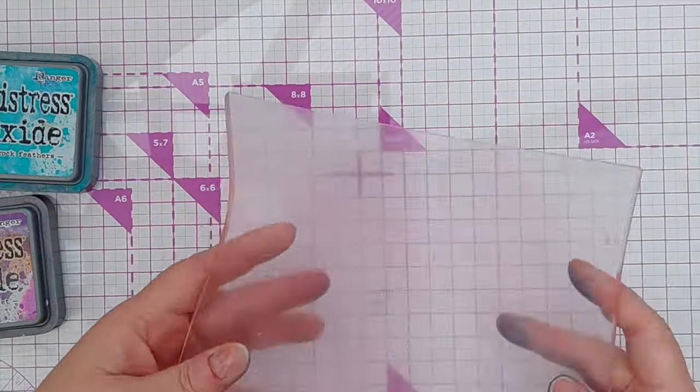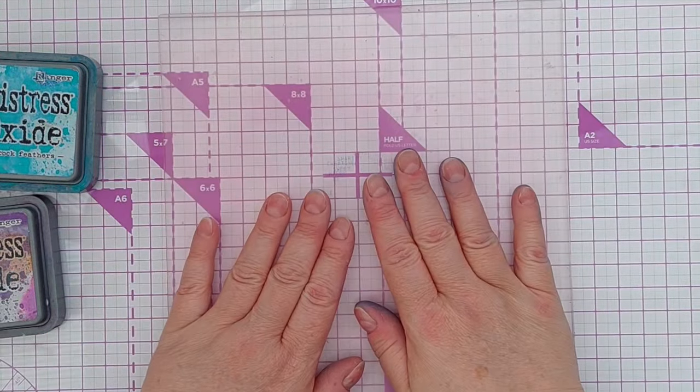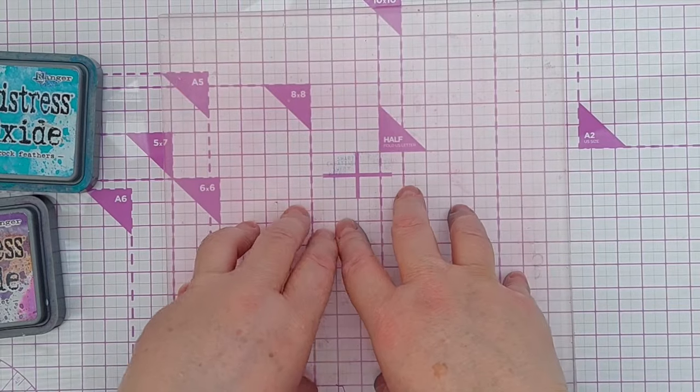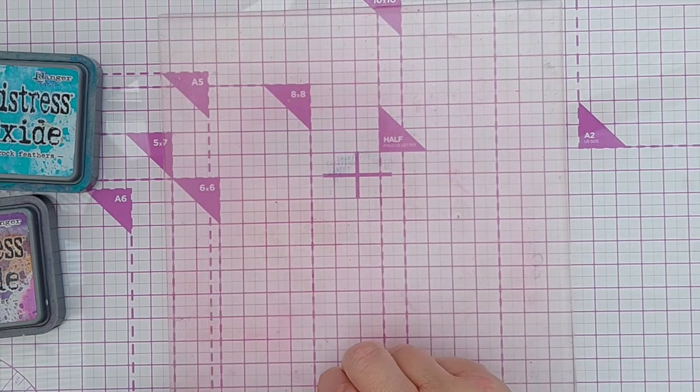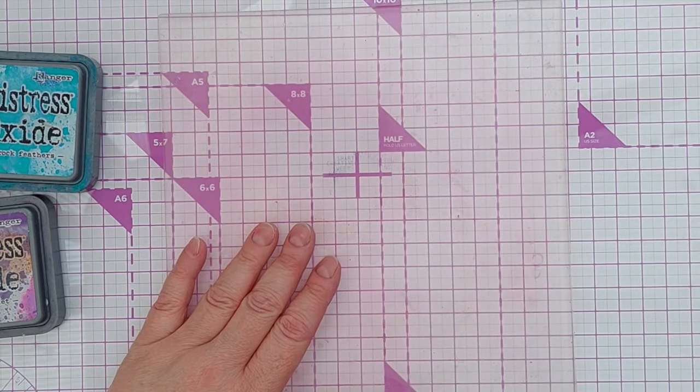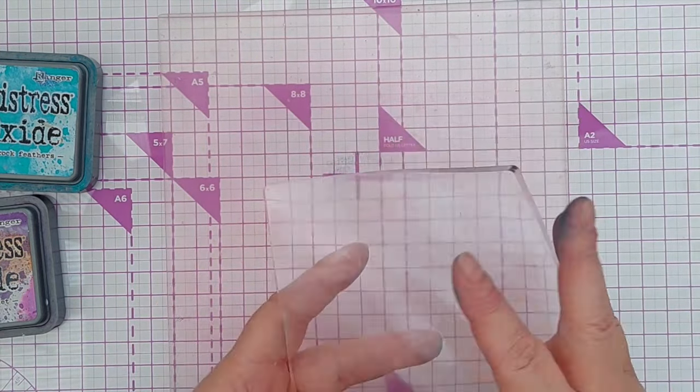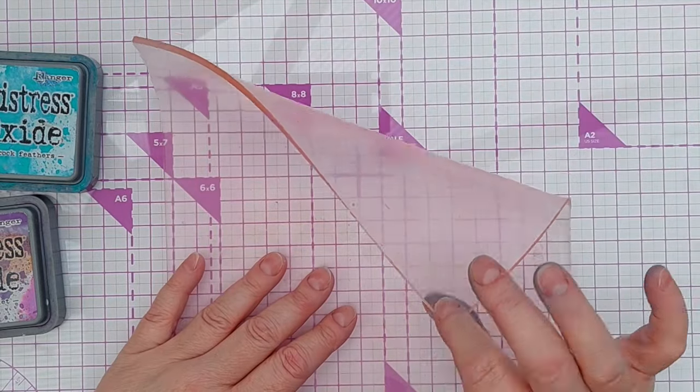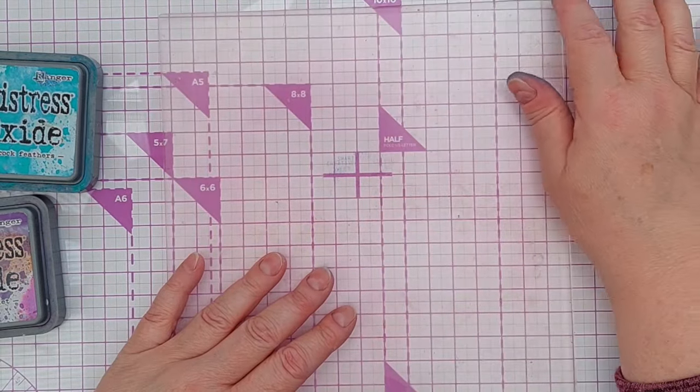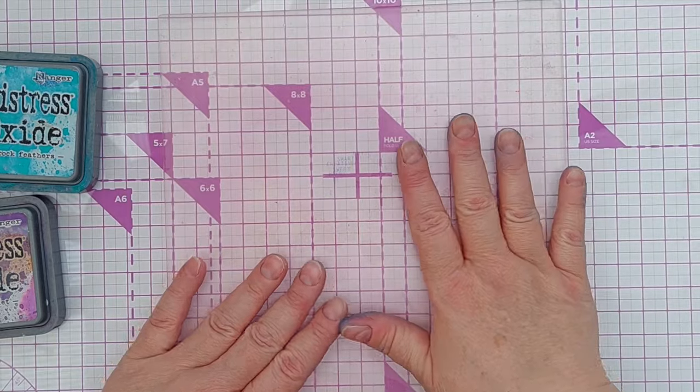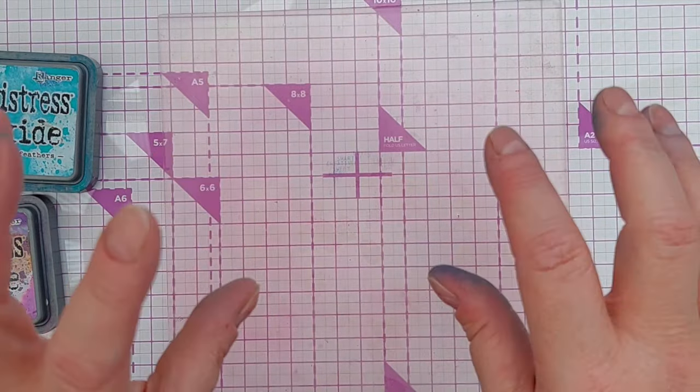I'm also going to show you how I use my grip mat to pull prints. Now grip mats look a bit like gel plates but they're made of a different material. Gel plates are made from a mineral oil based gel, and grip mats are generally made from photopolymer, which is the same stuff that we make photopolymer stamps out of.